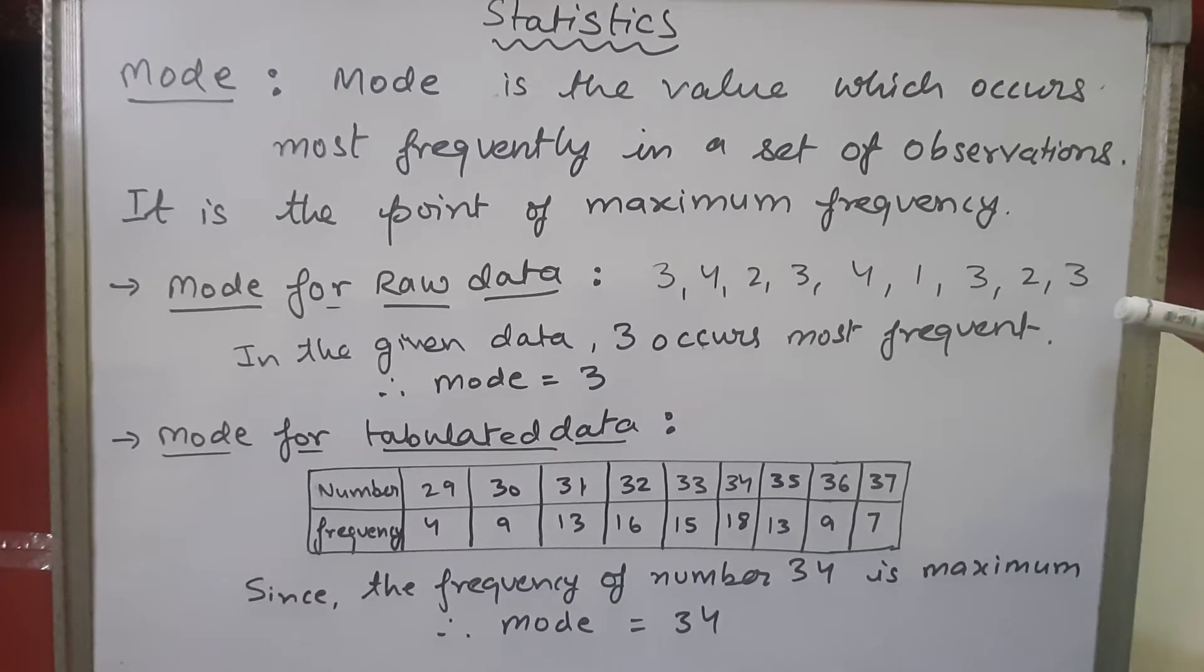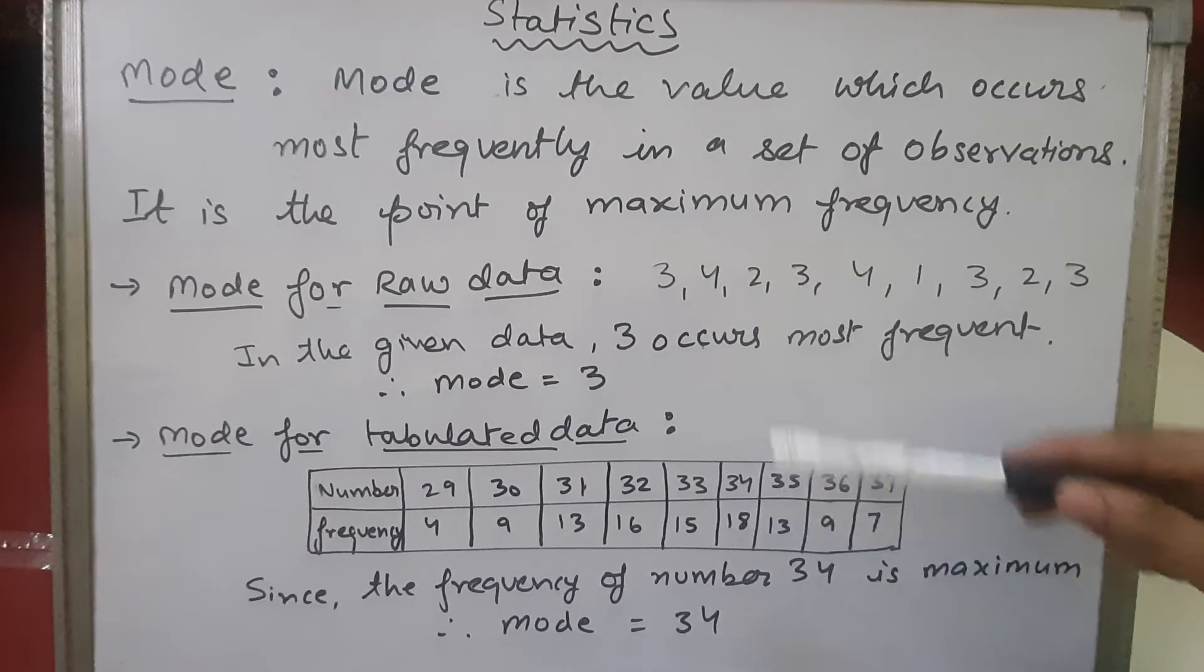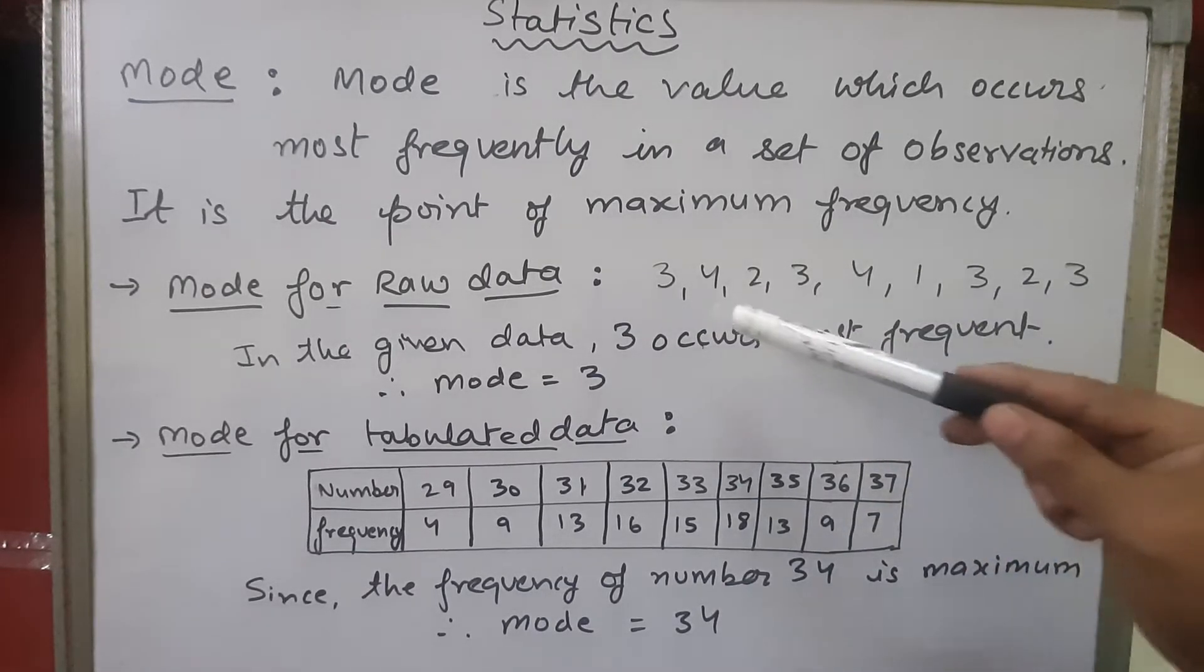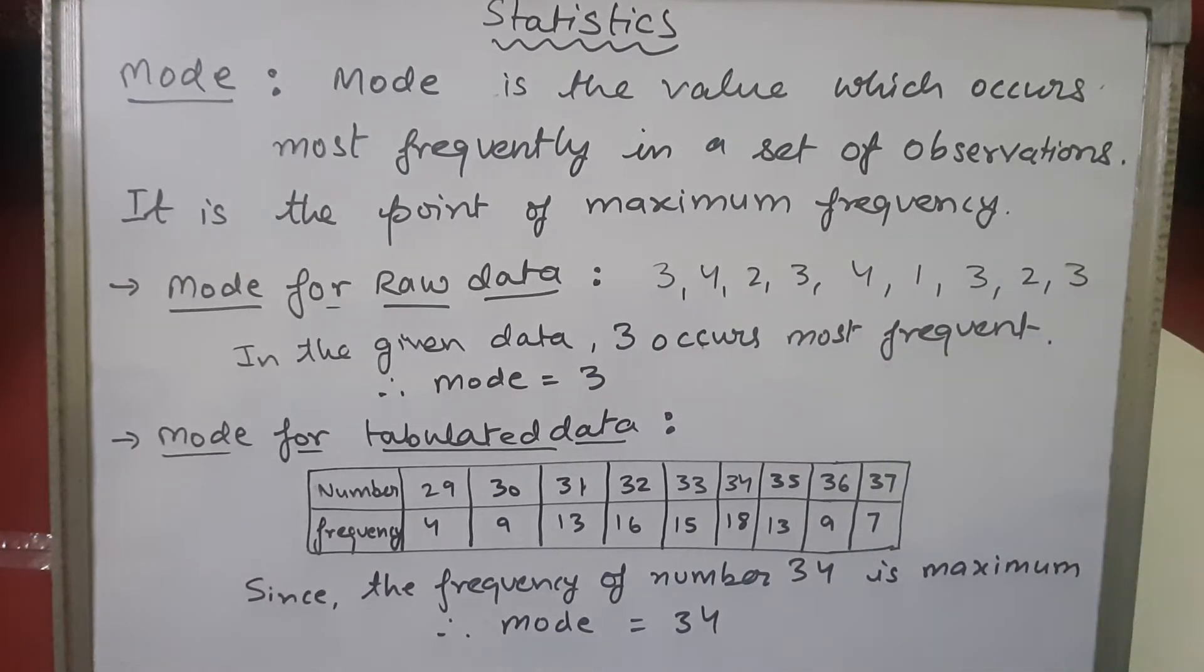Let's see the mode of the raw data. Here you can see our data is given: 3, 4, 2, 3, 4, 1, 3, 2, 3. You can see that one has appeared only one time, two has appeared two times, three has appeared four times, and four has appeared two times.